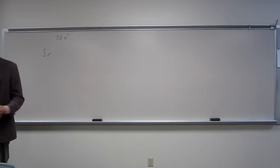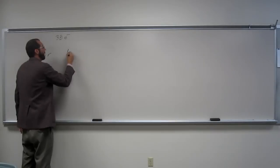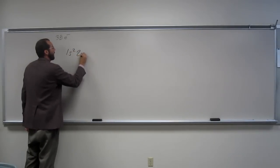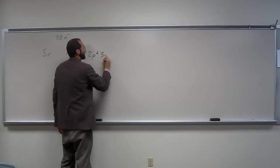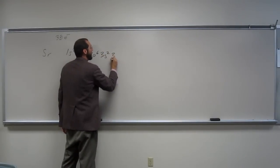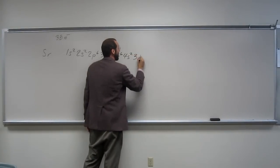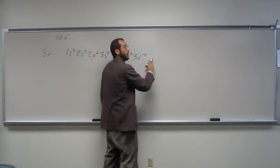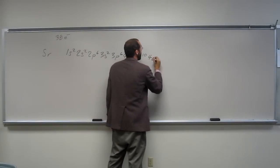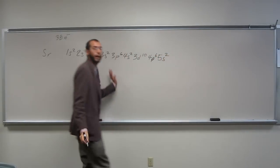Let's write the electron configuration. How do we do it? We look at the periodic table. Let's write it together. What is it? 1s2, 2s2, 2p6, 3s2, 3p6, 4s2, 3d10 - so that's where it gets weird, right? 3d10, 4p6, 5s2. That makes sense, right?